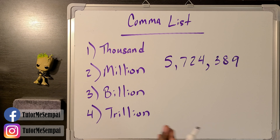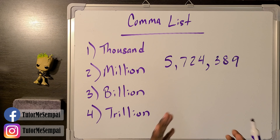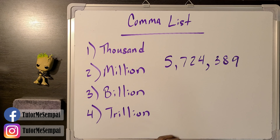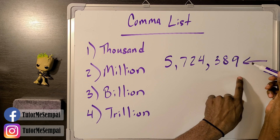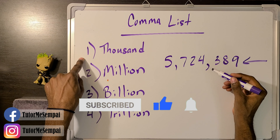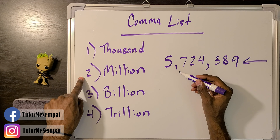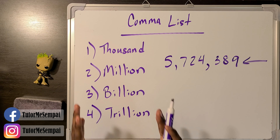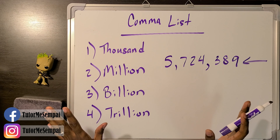To quickly review what we talked about in our previous video: how are we going to name our commas? If you remember, we talked about starting from the right side. So we start from the right and travel across our number, and every time we find a comma, we assign it a name. The first comma you run into is your thousand comma, the next is your million comma, and if you find more, we have a billion comma and a trillion comma. Try not to mix up the order — you can't switch it around. This is the specific order you name your commas.